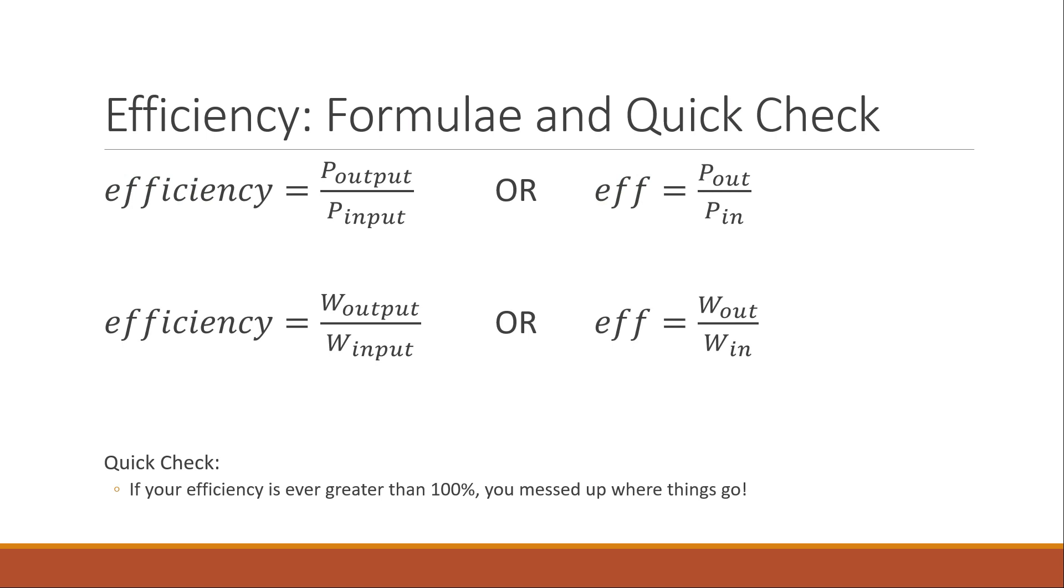So here's our formulas. The efficiency is the power output over the power input, or the work output over the work input, or in shorter forms, P_out over P_in, or W_out over W_in. These are our efficiencies here. Here's a little quick check. If your efficiency is ever greater than 100%, you put them in the wrong spot. You should never have an efficiency greater than 100%. That's crazy.